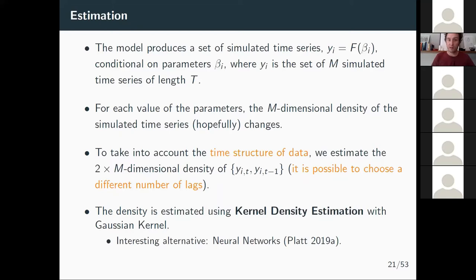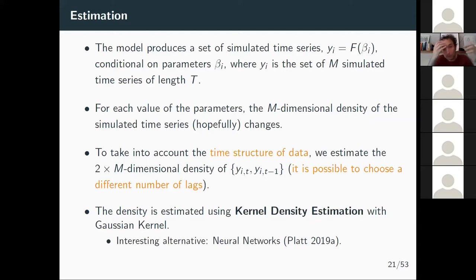It's possible to choose a different number of lags — in the new project with Alessandro we used three lags, so the joint density of y_t, y_{t-1}, y_{t-2}, and y_{t-3}. We compute this 2M-dimensional density using kernel density estimation, which is a non-parametric estimator that needs enough data, but it seems to work quite nicely in this model and in simple models we experimented with. In the appendix of the paper we have applications of this estimation method to simple models to verify it works.